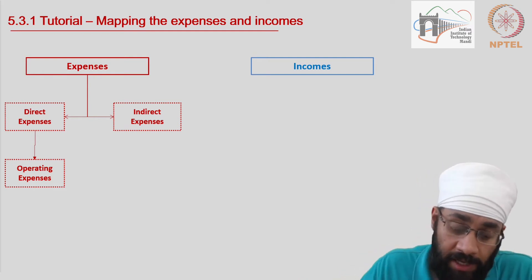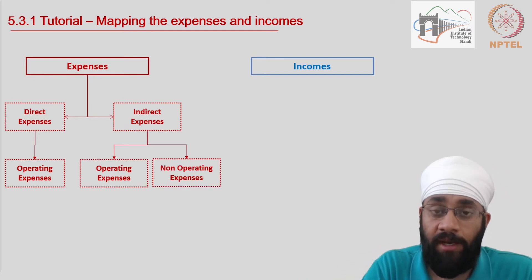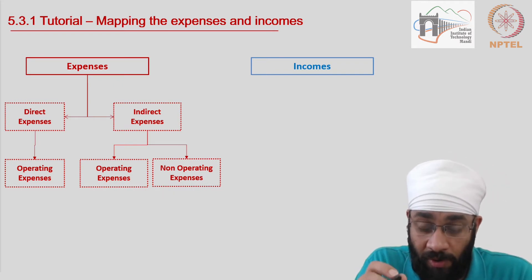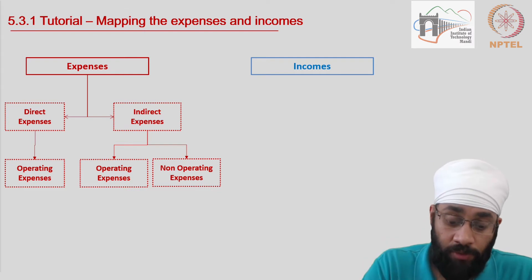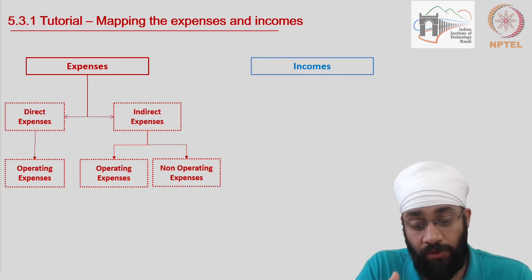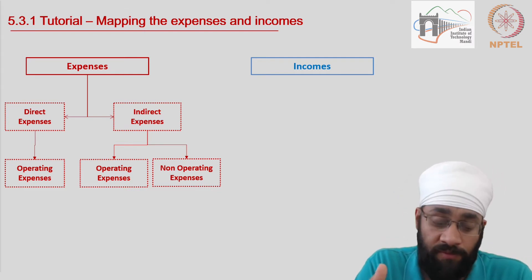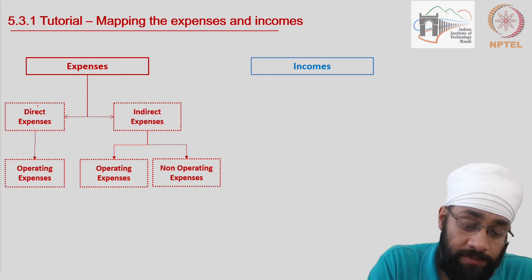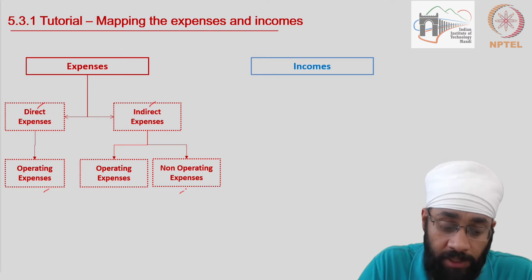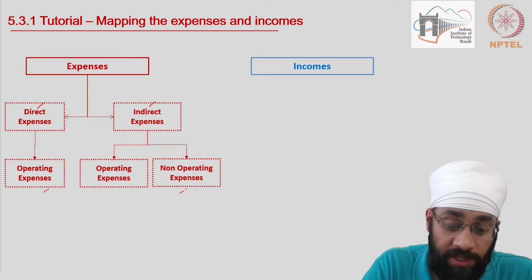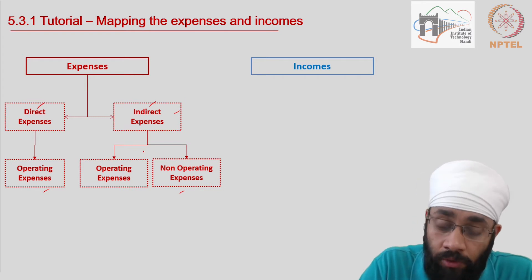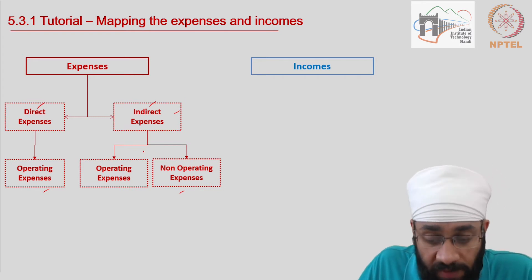On the other hand, indirect expenses can be operating or non-operating in nature. So this is how you think about the two typologies: you have direct versus indirect, and operating versus non-operating. All direct expenses are operating expenses, while indirect expenses could take either of the two forms.